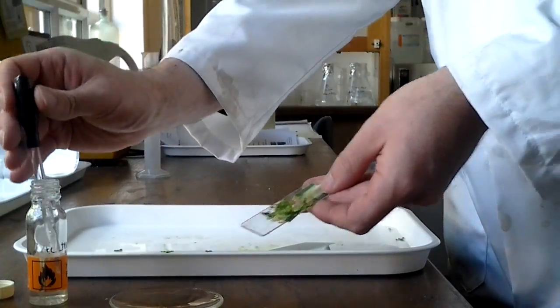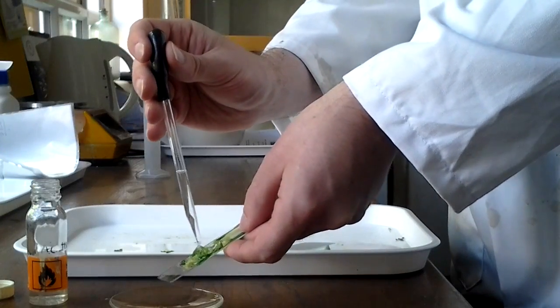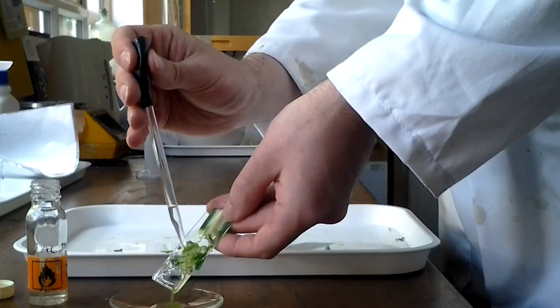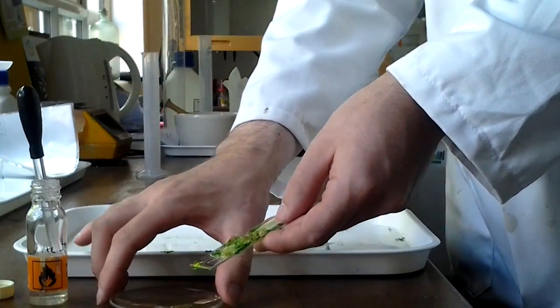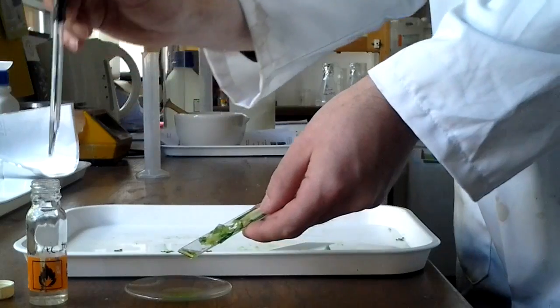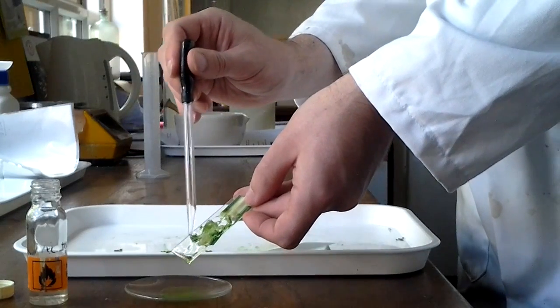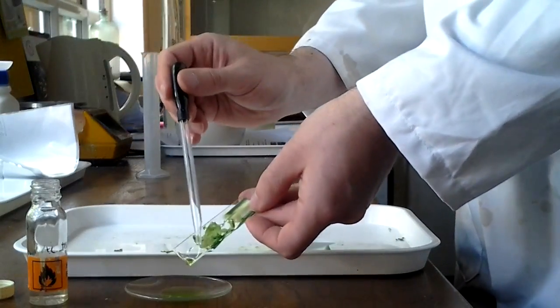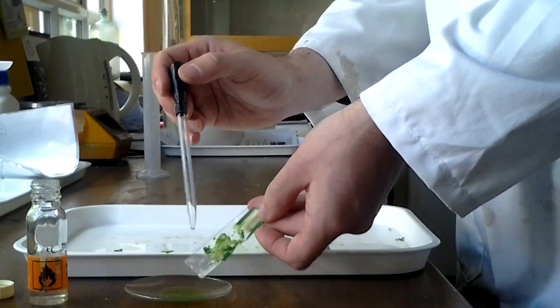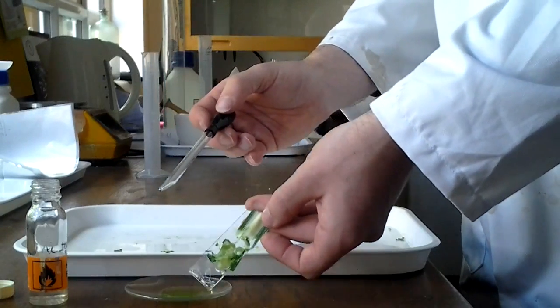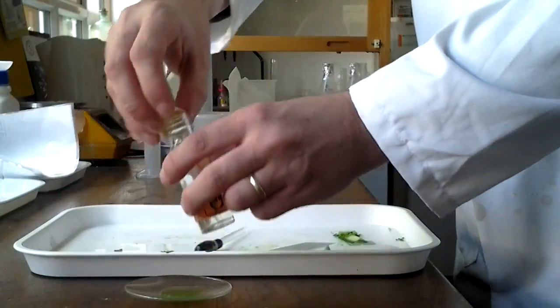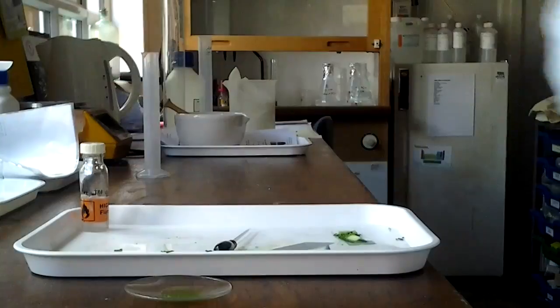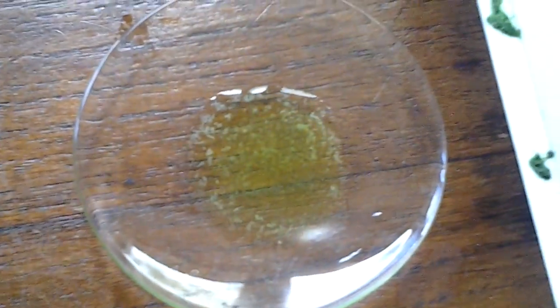So take a pipette full of that and rinse the mushed up plant from the slide into a watch glass, which I have positioned here. I'm going to do a couple more of those, just to get as much green stuff in as possible. We're trying to avoid getting too much solid material in at this stage. I've got a mushed up plant that we can discard, and put the lid back on the acetone. I've now got a nice watch glass full of kind of greenish liquid.